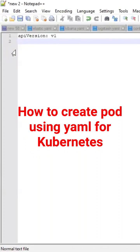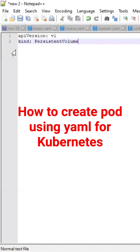So now you can understand that there is the API version. After the API version, you need to specify the kind — what type of object you wanted to create. For example, if you are creating a deployment, you specify deployment. If you are creating a persistent volume, you need to use persistent volume. Creating a YAML file is very simple — you need to understand the purpose of this file and what details you wanted to provide.